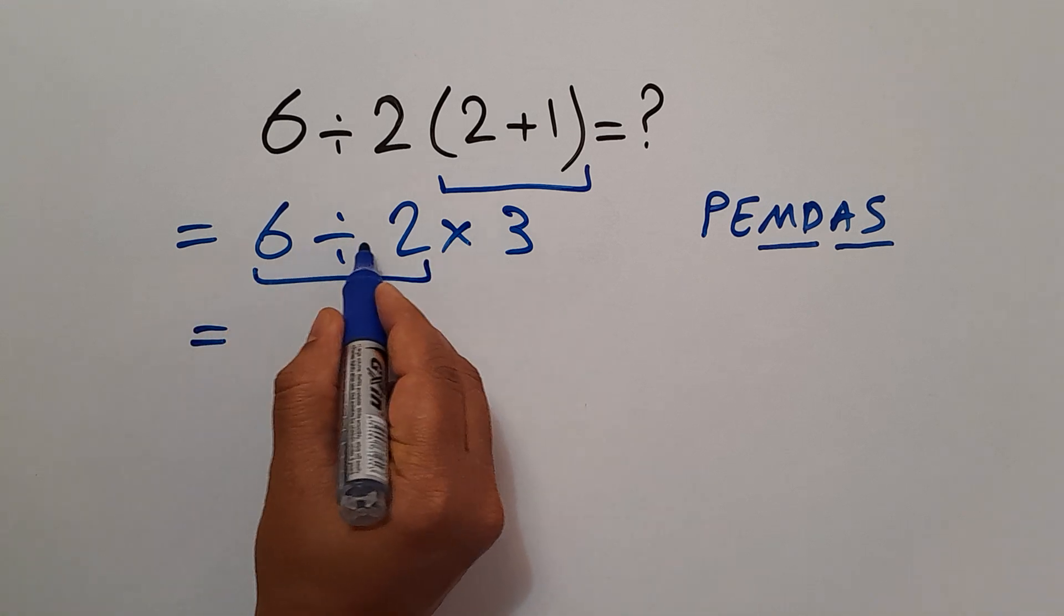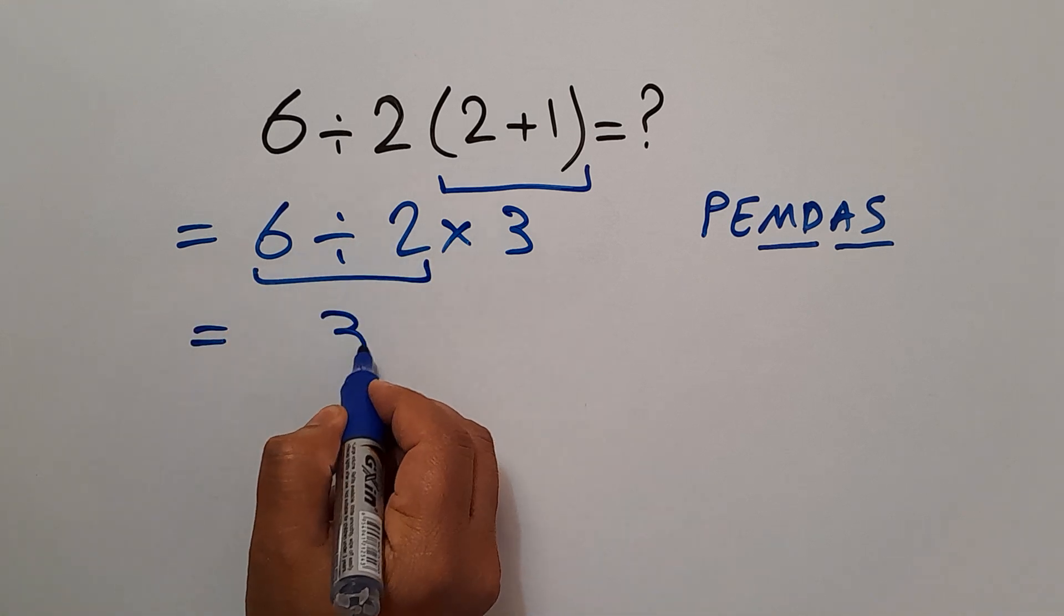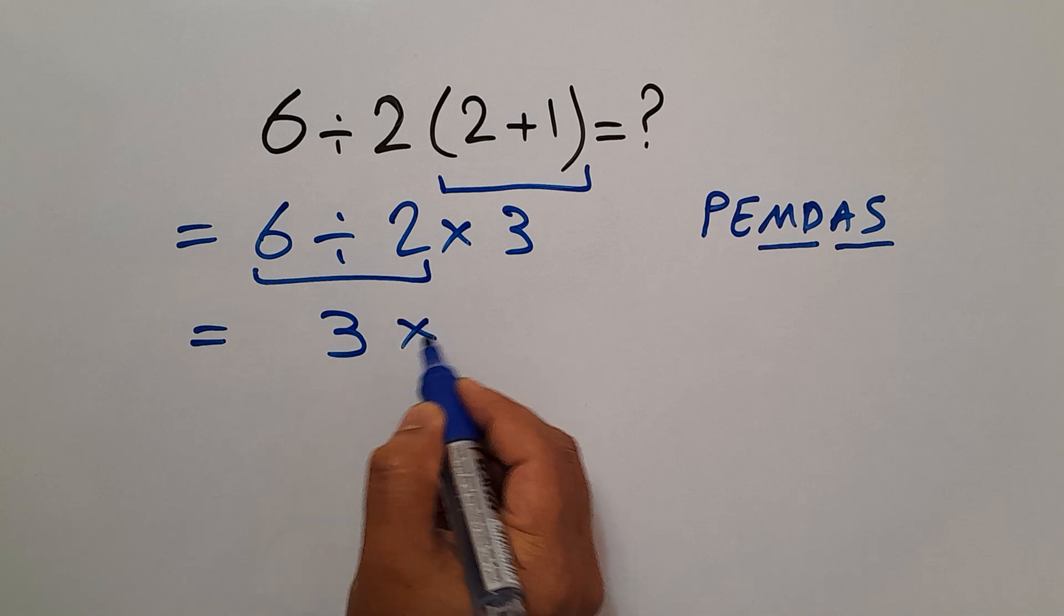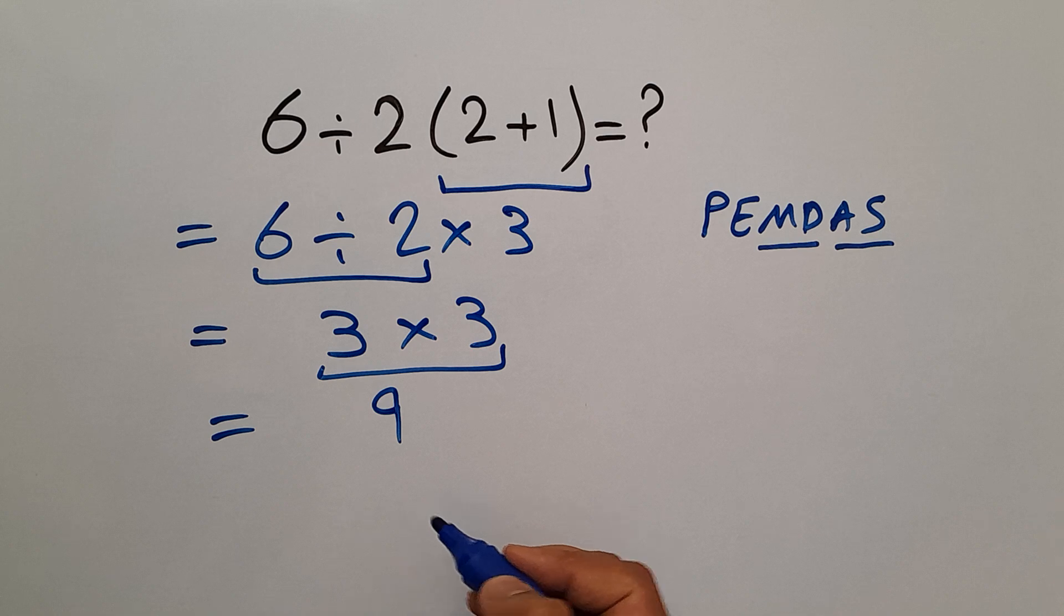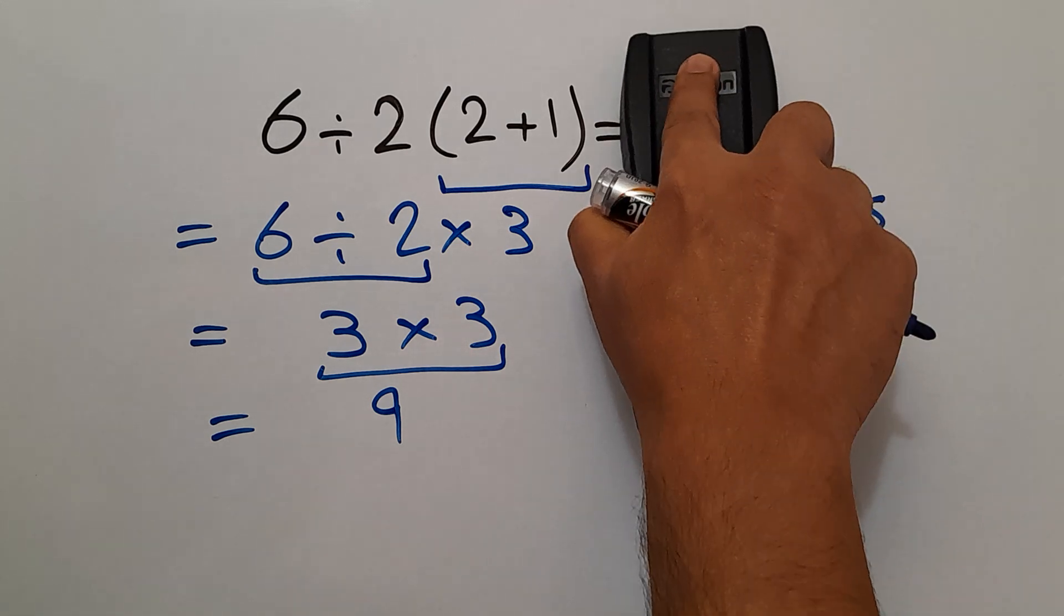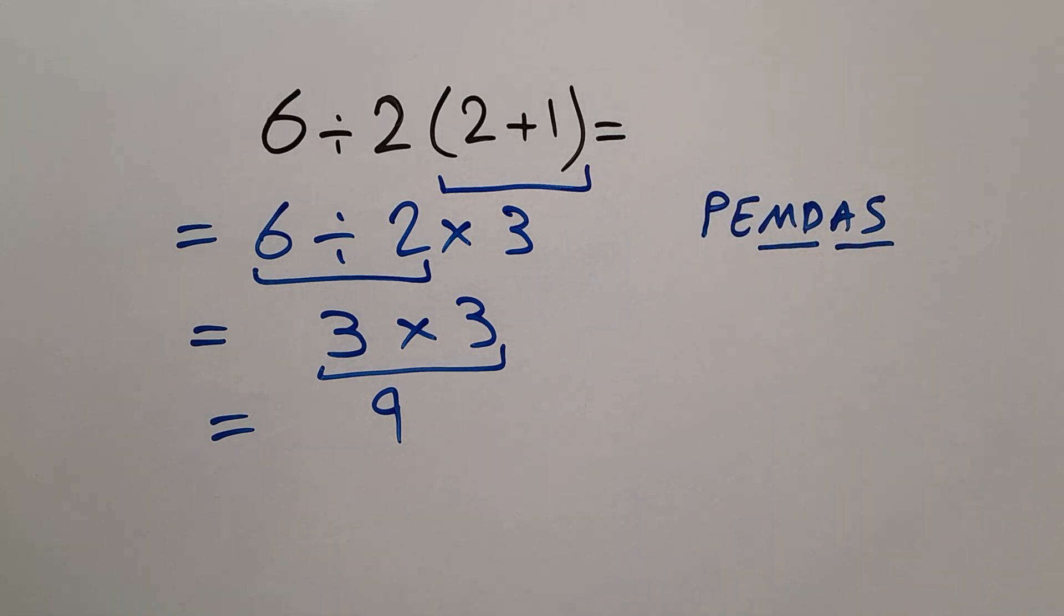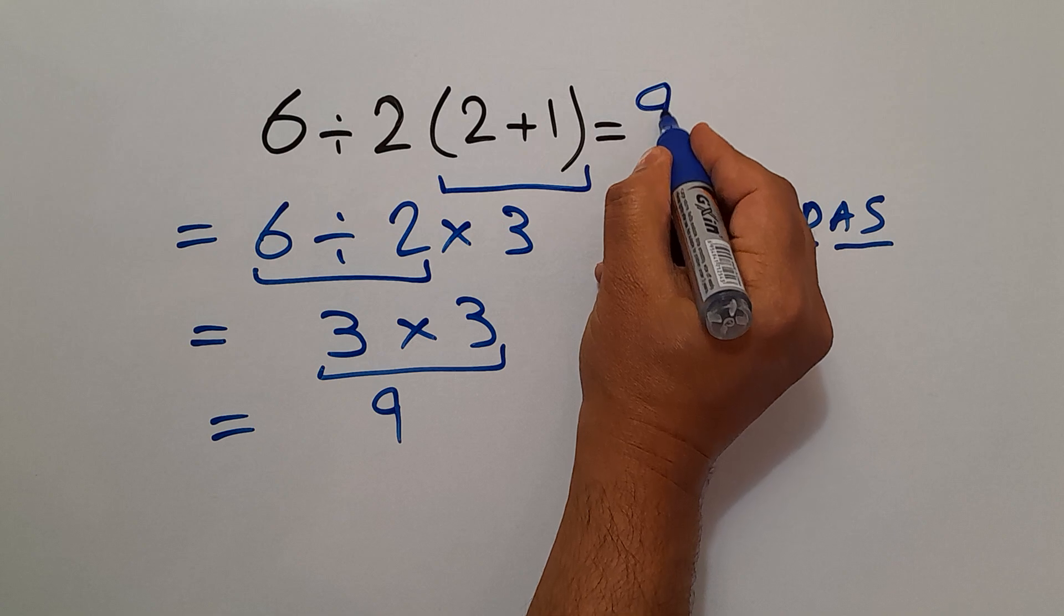6 divided by 2 gives us 3. And we have 3 times 3, which equals 9. So, our final answer to this problem is just 9. Thank you.